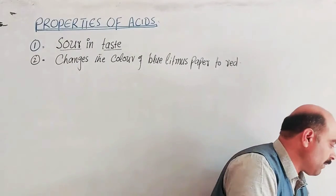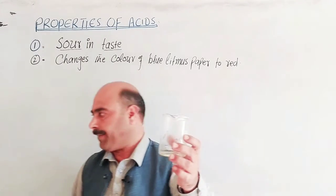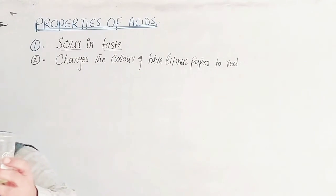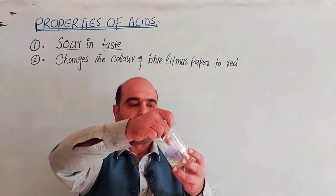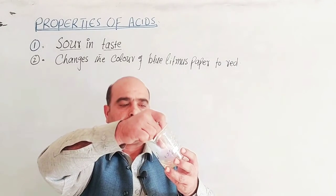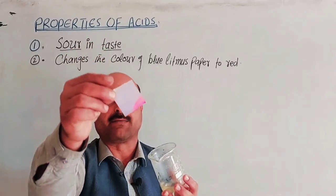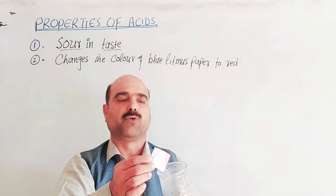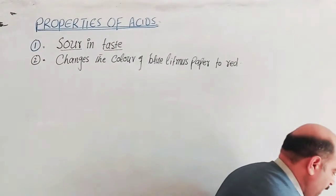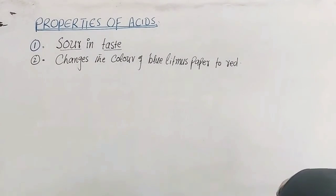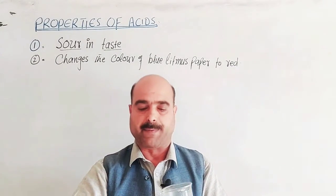In a practical example, if you have an acid or acidic solution and dip the blue litmus paper into it, the color will turn red. The red litmus paper, however, remains red — it does not change color in an acidic solution.